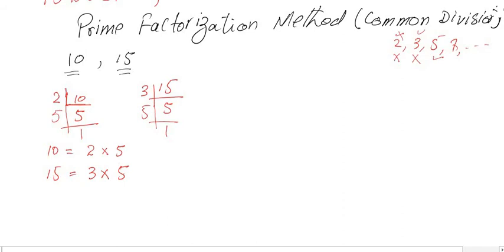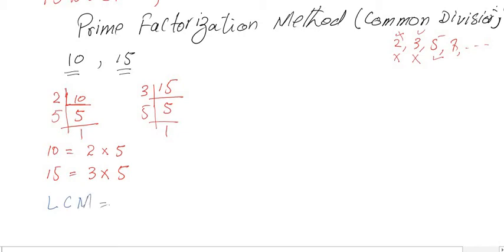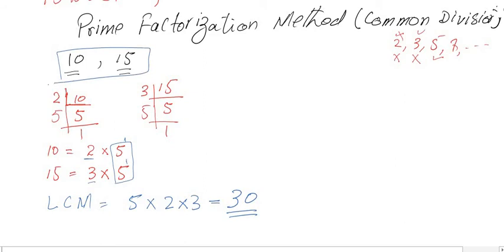Now take the prime factors with their maximum powers. We observe that 5 is common to both 10 and 15, and each has it to the power of 1, so we take one 5. The number 2 appears only in 10, and 3 appears only in 15, so we include both. Multiplying: 2 × 3 × 5 = 30. So the LCM of 10 and 15 is 30.